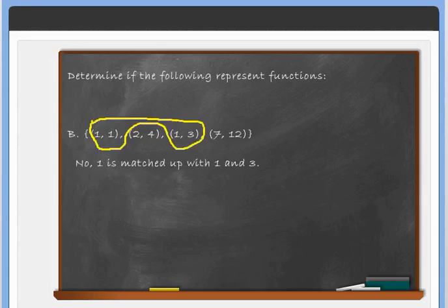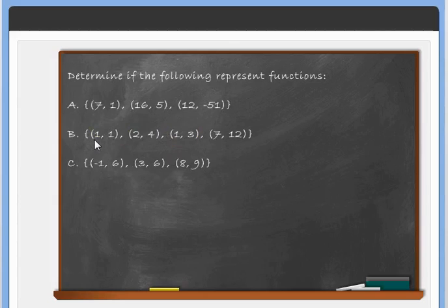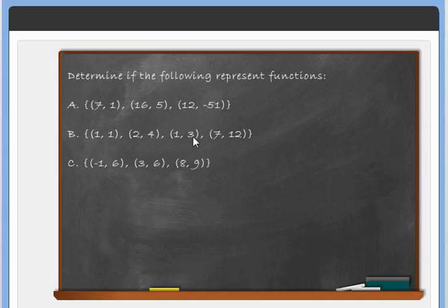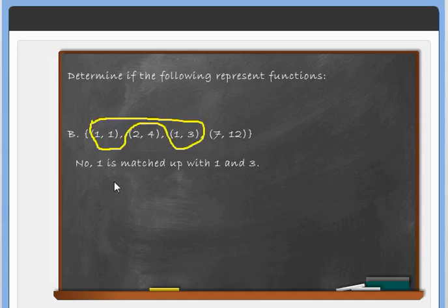For example b: (1, 1), (2, 4), (1, 3), (7, 12). Here 1 appears as an x value twice — matched with both 1 and 3. Since one x is matched with two different y values, this is not a function.